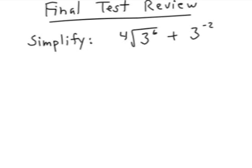First of all, what you need to do is think of the first radical as a fractional power. That is 3 to the 6 fourths power. Okay, the 4 is the index and that's the denominator of your fraction. Let's go ahead and look at the next part. The negative 2 power means that goes in the denominator of a fraction, so it's 1 over 3 squared.